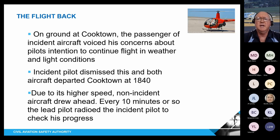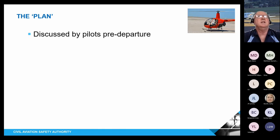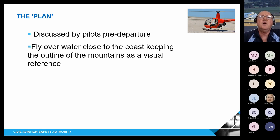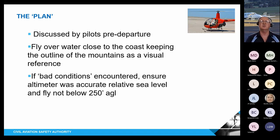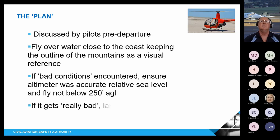The non-incident aircraft pulled ahead due to its higher speed but checked on the radio every 10 minutes. So what was the plan these pilots discussed? They were going to fly over water close to the coast, keeping the outline of the mountains as a visual reference. If bad conditions were encountered — and they never actually articulated exactly what 'bad conditions' meant — they would ensure their altimeter was accurate relative to sea level and fly not below 250 feet AGL. Not only did they not define what bad conditions were, they weren't clear on how they would ensure that altimeter accuracy relative to sea level. And if it got really bad, they would land on the beach. I'll get you to look at that plan and decide for yourself if that's an adequate plan for what was being attempted.